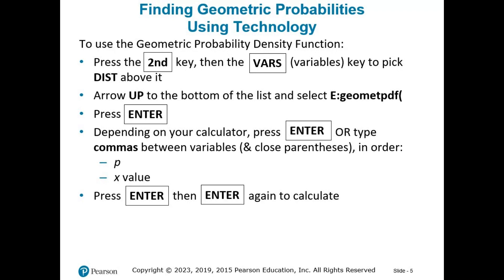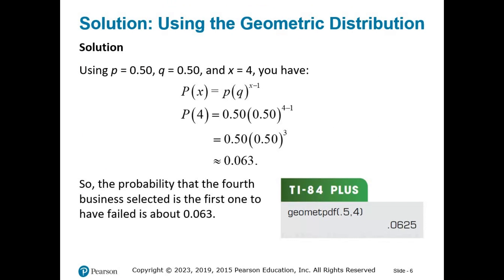To access the function, press the second key, then the VARS or variables key to choose the distributions menu. Arrow up to the bottom of the list and find Geomet PDF — make sure it's the PDF option — and press enter to select it. Depending on your calculator, you may enter the variables separated by commas and close the parentheses, or enter them pressing enter between each. The variables you need are P and X, in that order. For the previous example, enter 0.5 for P and 4 for X. Press enter, then enter again to calculate. The answer is 0.0625, or about 0.063.